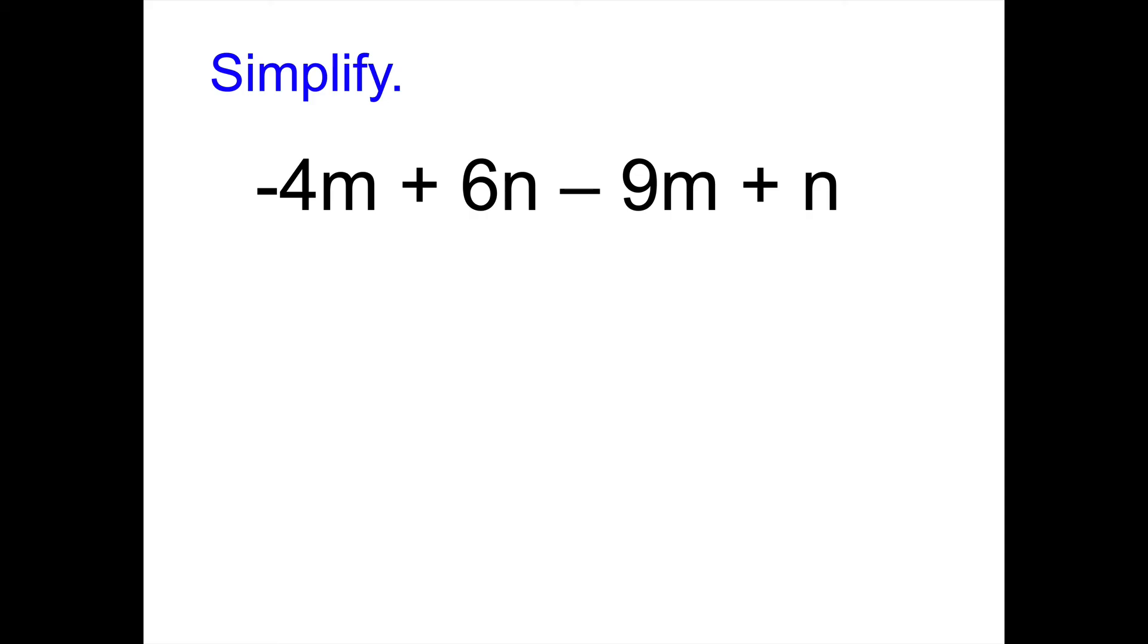Please give this one a try. And so for negative 4m plus 6n minus 9m plus n, we have two terms with m which can be combined. Negative 4 and negative 9 equals negative 13m. And then we have a positive 6n and a positive n for a grand total of 7n. Notice I'm just writing them in alphabetical order.